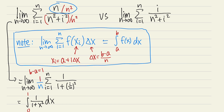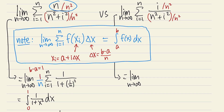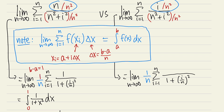Now let's look at the second problem. We still want to see i/n, so let's divide the top and bottom by n². This is the limit as n goes to infinity, and on the top it's a little trickier — we have n² — but we still put 1/n in front of the summation, i going from 1 to n. The bottom is the same: 1 + (i/n)². And the top becomes i/n squared, with the 1/n in front, so that multiplied gives (i/n)².